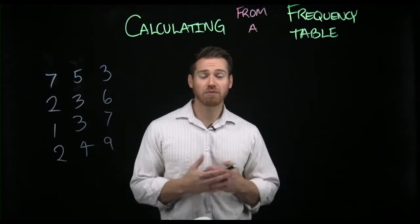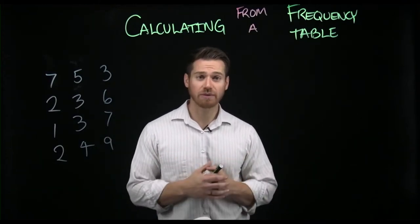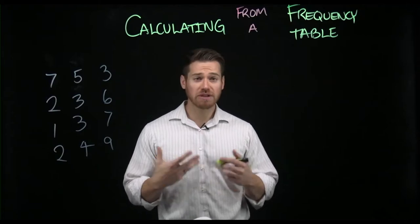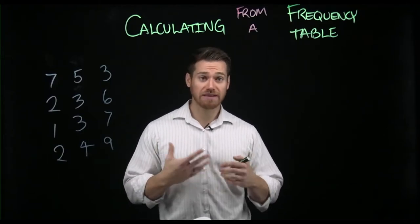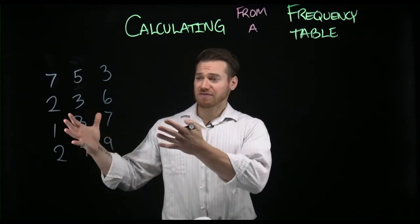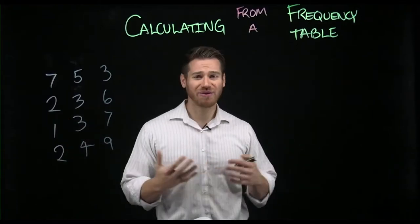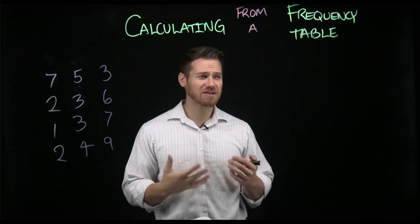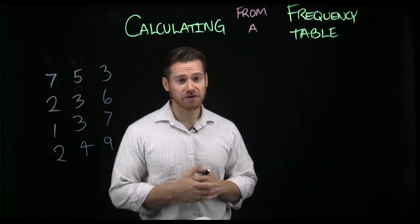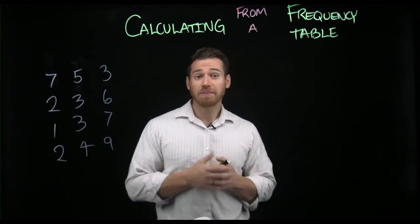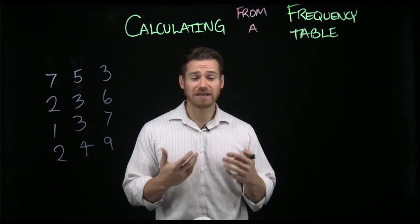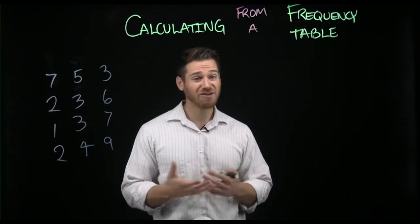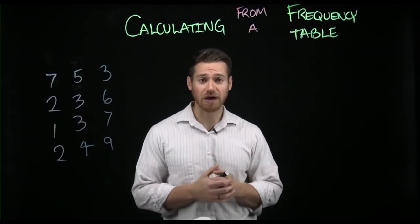All right, so what we're going to do here is a little bit of practice calculating from a frequency table. A frequency table is just a way to quickly summarize data. If we have a set of scores like we do over here, you'll note that just having numbers written randomly on the board doesn't really help us understand that data very much. A frequency table is a basic way to be able to see what kinds of elements might be common in your data, and you can also do some calculations from it rather quickly.